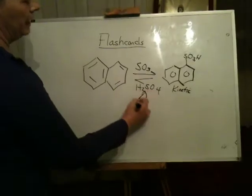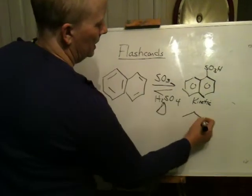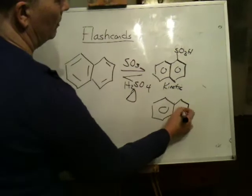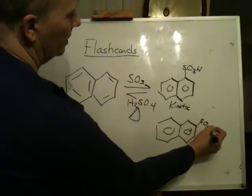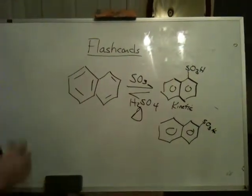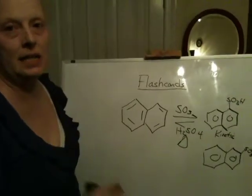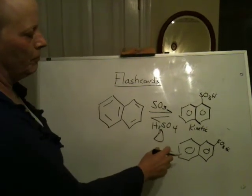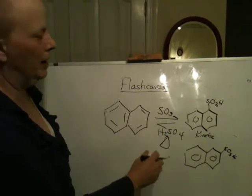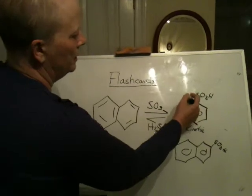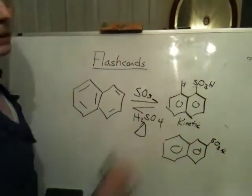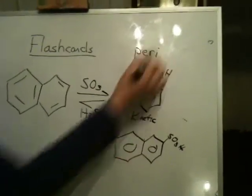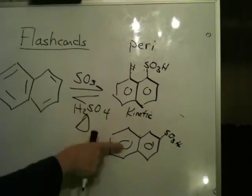But if the reaction is heated and allowed to equilibrate, this is actually the thermodynamic product. And I want you to think about that, like why that is. So you'll see this in the flashcards. Think about why this would form fastest. That's based on the intermediate. And then think about why this would form, this would be the most stable product. What is it about this position right here that might be a little unstable? These are called the peri positions. Okay, so think about it. So this is kinetic, this is thermodynamic.